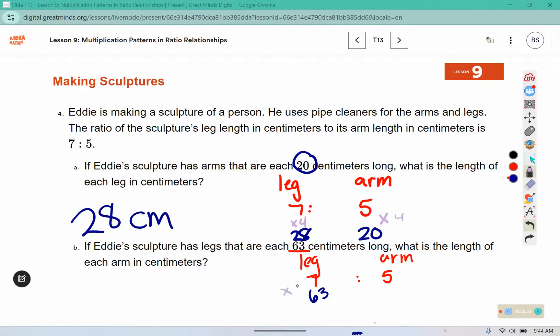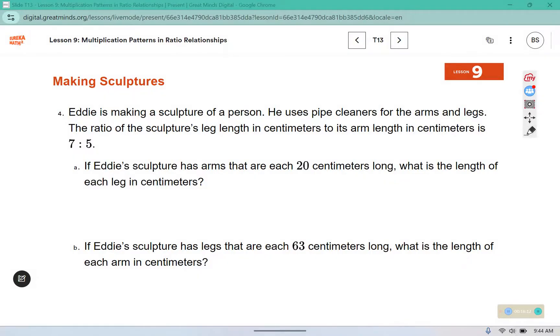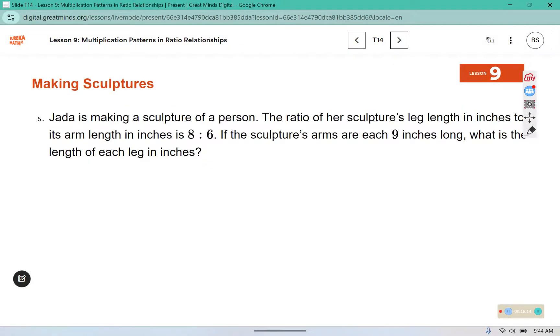7 times 9 is 63. So 5 times 9 will tell us how long the arms need to be.